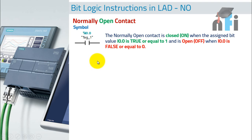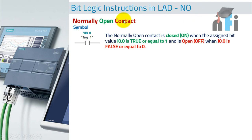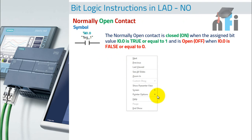First is bit logic instructions and the letter NO. NO stands for Normally Open contact. Now, if you know about industrial controls, we also have a NO switch. So a NO switch is generally different from a NO contact.